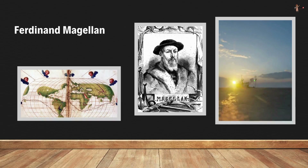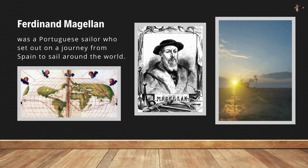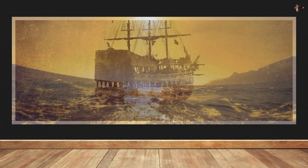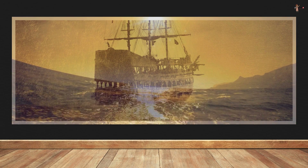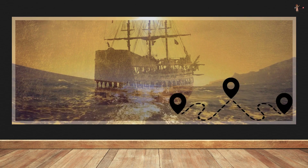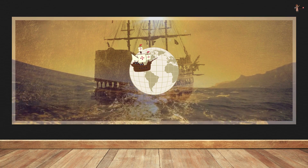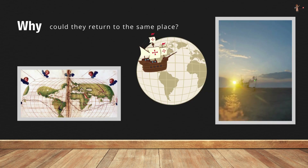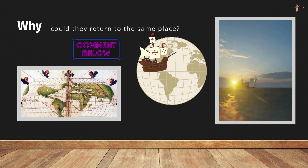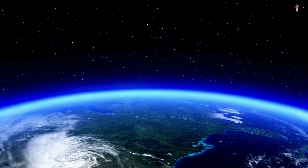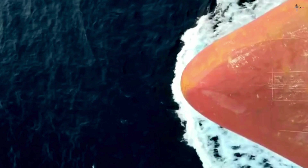Now let me tell you a quick story. Ferdinand Magellan was a Portuguese sailor who set out on a journey from Spain to sail around the world. He died on the way, but his ships and crew continued the voyage. They sailed in a single direction and after three years they came back to the place from where they had started. Can you tell me the reason why in the comments below?